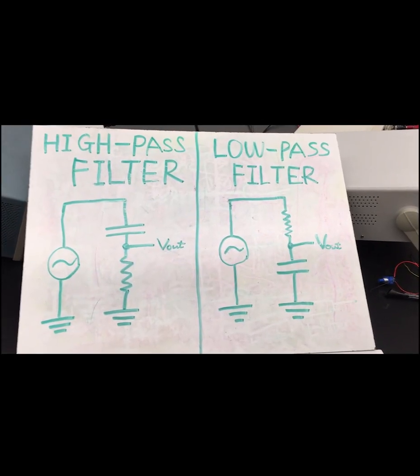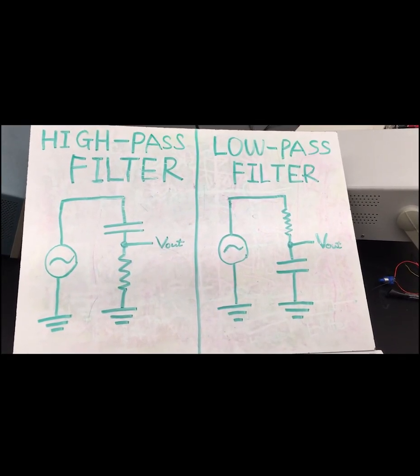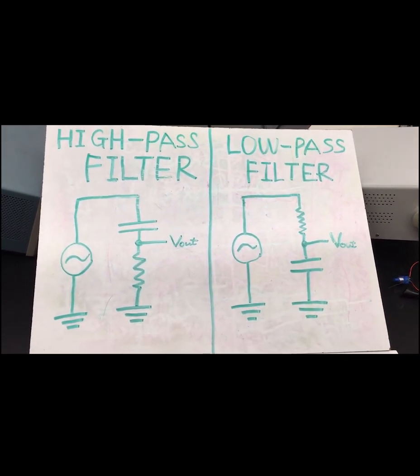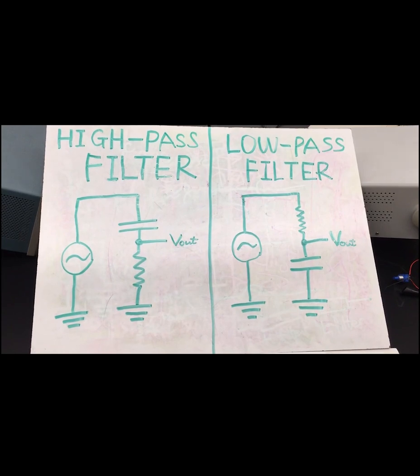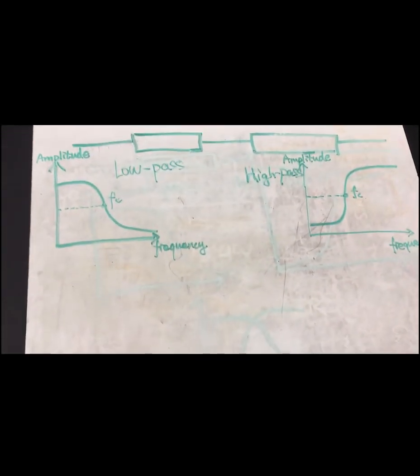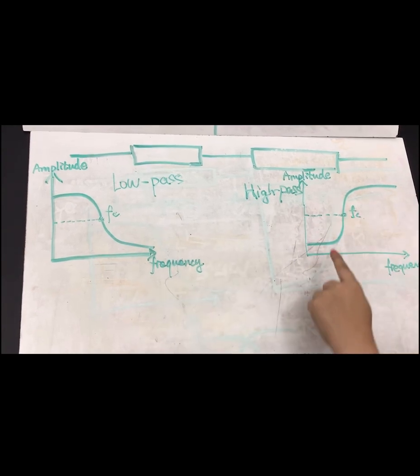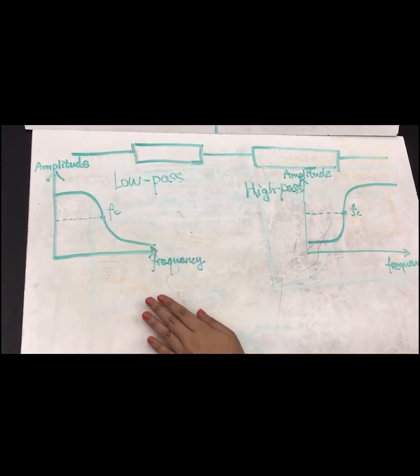Basically we can use the resistor and the capacitor to build either a high pass filter or low pass filter depending on the circuit configuration. The high pass filter will block the low frequency and allow the high frequency to flow out and vice versa the low pass filter.